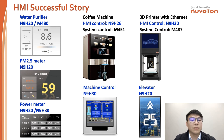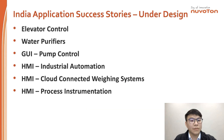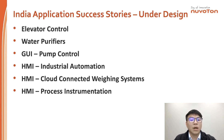There are additional successful stories, including machine control, PM2.5 monitoring, power meters, and more. Some customers in India have already implemented HMI products such as elevator control, pump control, industrial automation, car connectivity systems, and more.